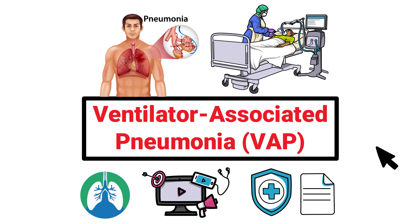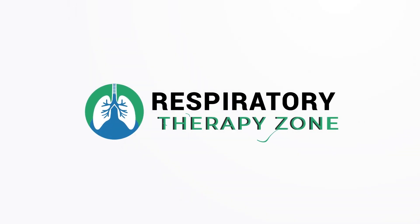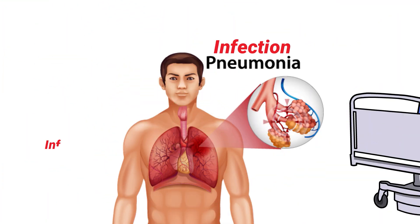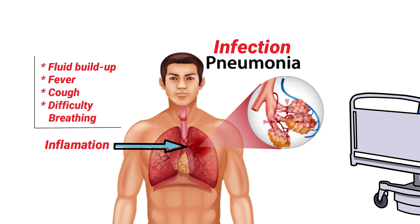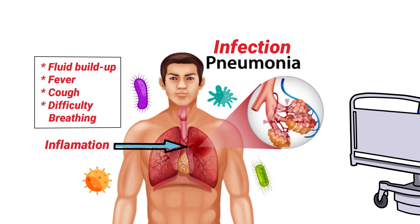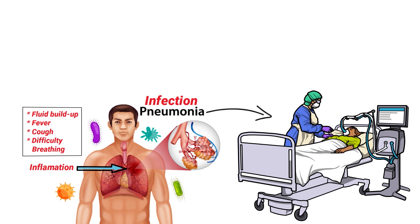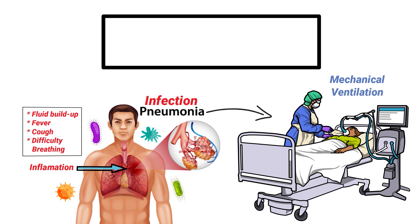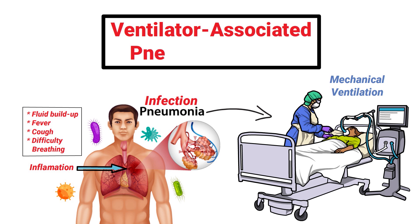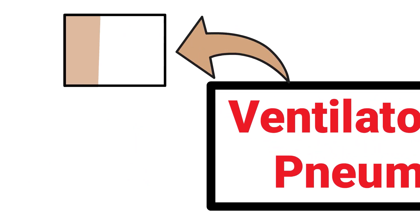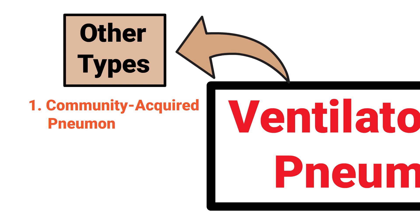Pneumonia is an infection that causes inflammation in the lungs and results in fluid buildup, fever, cough, and difficulty breathing. It's caused by a variety of different organisms including viruses, bacteria, fungi, and even parasites in some cases. When this disease is contracted while a patient is receiving mechanical ventilation, it is referred to as ventilator-associated pneumonia.